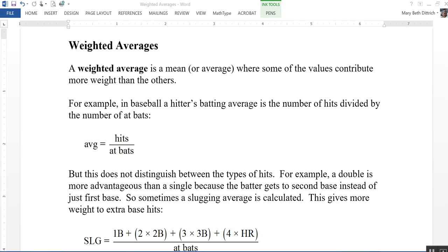For example, in baseball, a hitter's batting average is calculated by taking the number of hits and dividing it by the number of at-bats. So his average is his total number of hits divided by total number of at-bats.